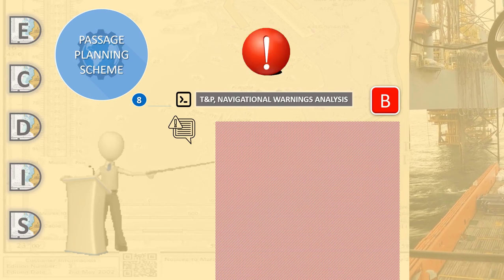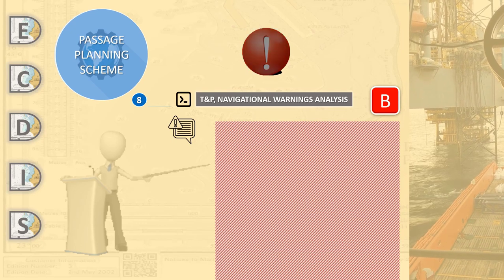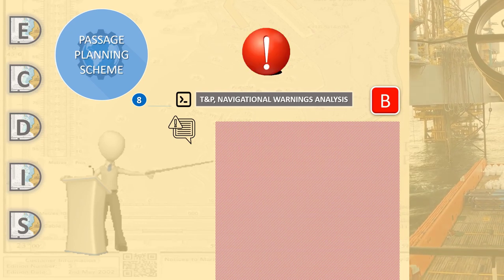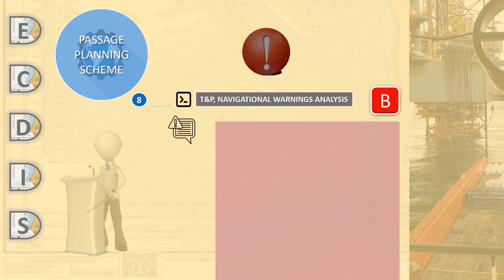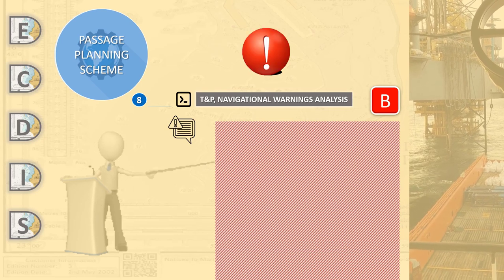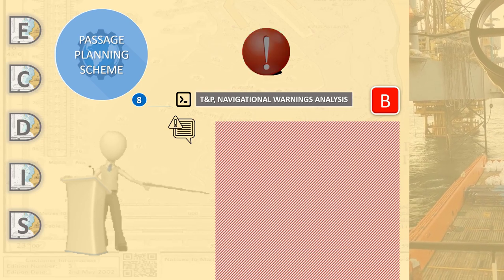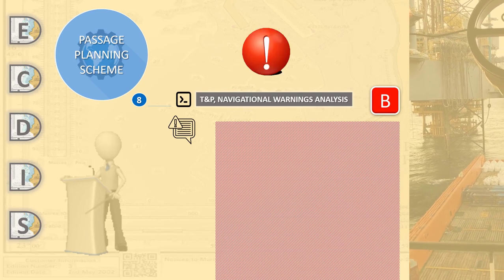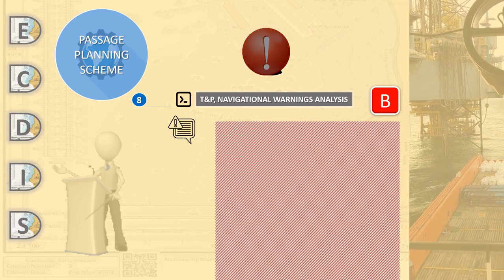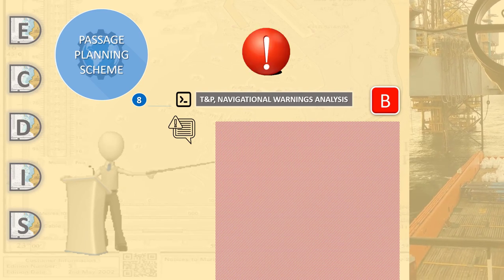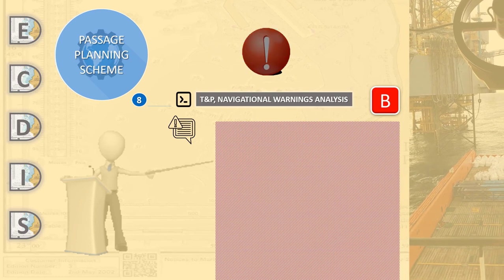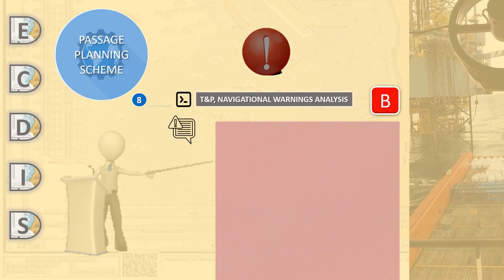If your vessel is paperless, you should have AIO active on your Aegis screen during passage planning. Use the ENCs and route checking in the normal way, noting any features that are described in the PICA report as being temporary. Check your route with the Aegis date set to the planned passage time.